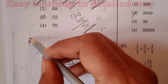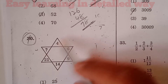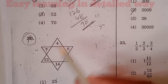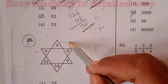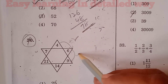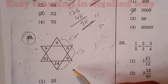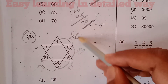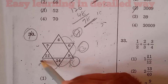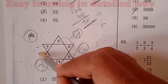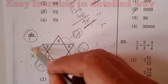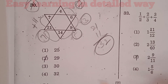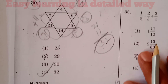Question number 30, the last question: We have the series 4, 6, 9, 14, 21, question mark. The differences are 2, 3, 5, 7 — which are prime numbers. The next prime number after 7 is 11, so 21 plus 11 gives 32. Option 4 is the right answer for question 30.